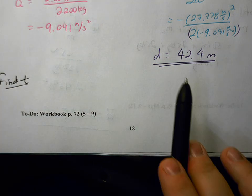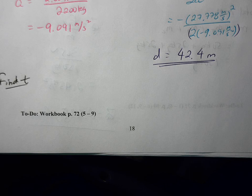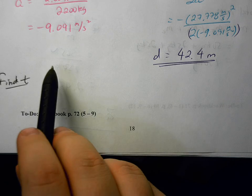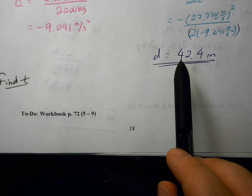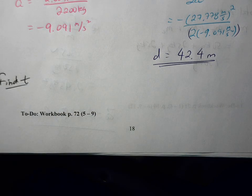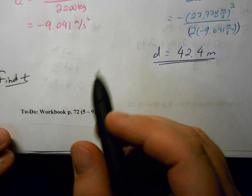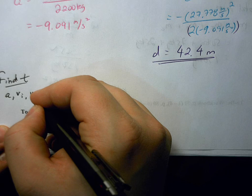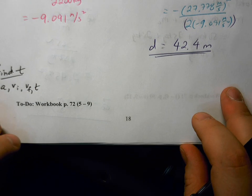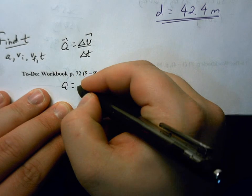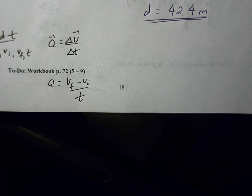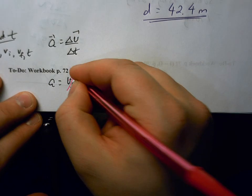Now that we've found d, we have v_i, d, v_f, and a. However, I want to avoid using d to find t because d was calculated from a previously calculated value. I also want to be cautious about chaining calculated values. So I'll look for an equation with acceleration, v_i, v_f, and t: a = (vf − vi) / t. Since v_f is zero, this becomes a = −vi / t.